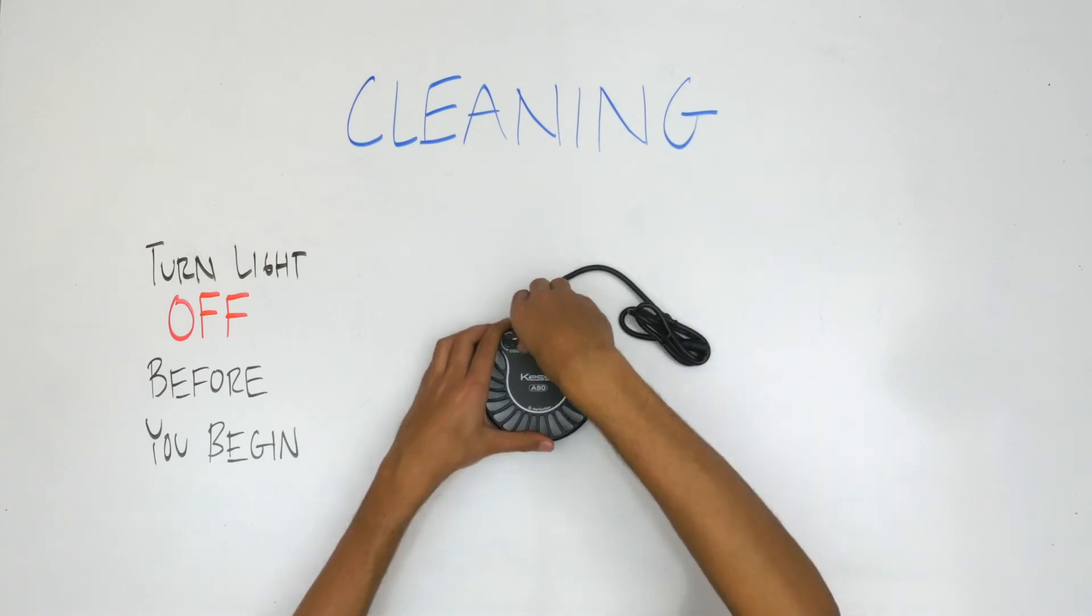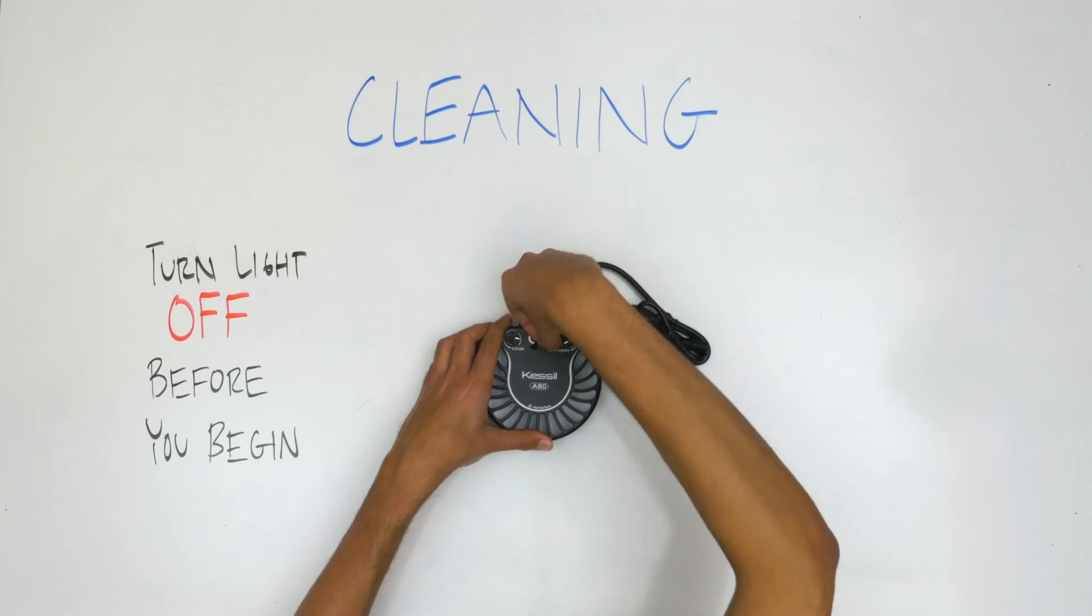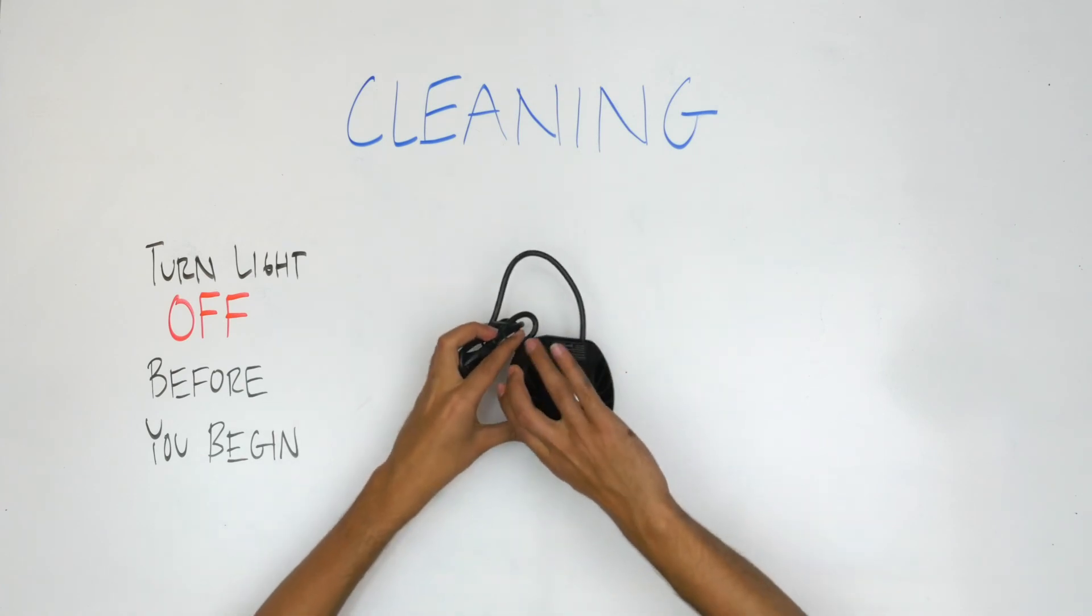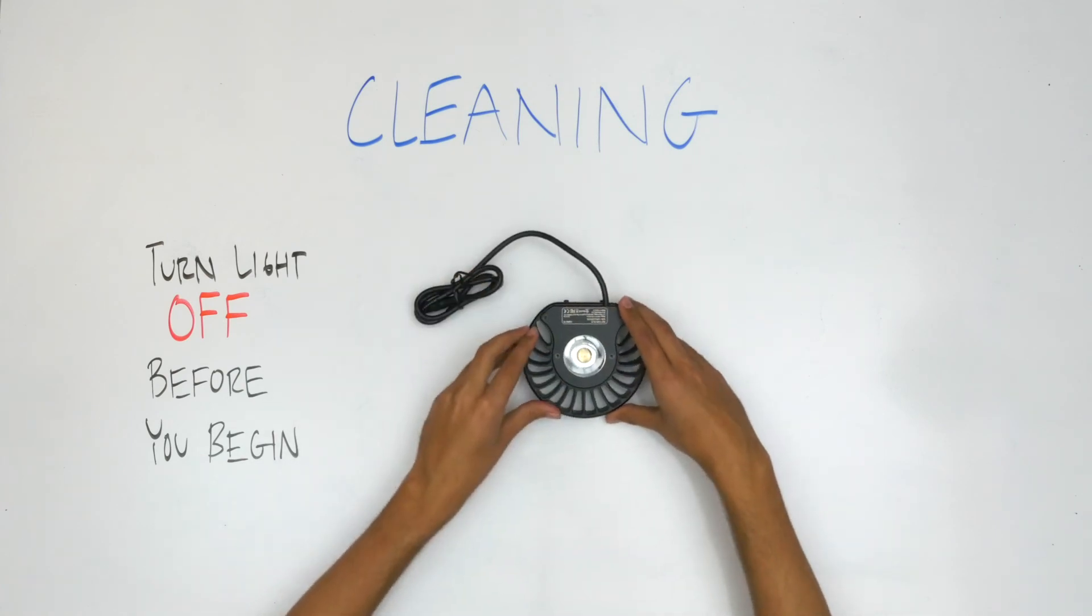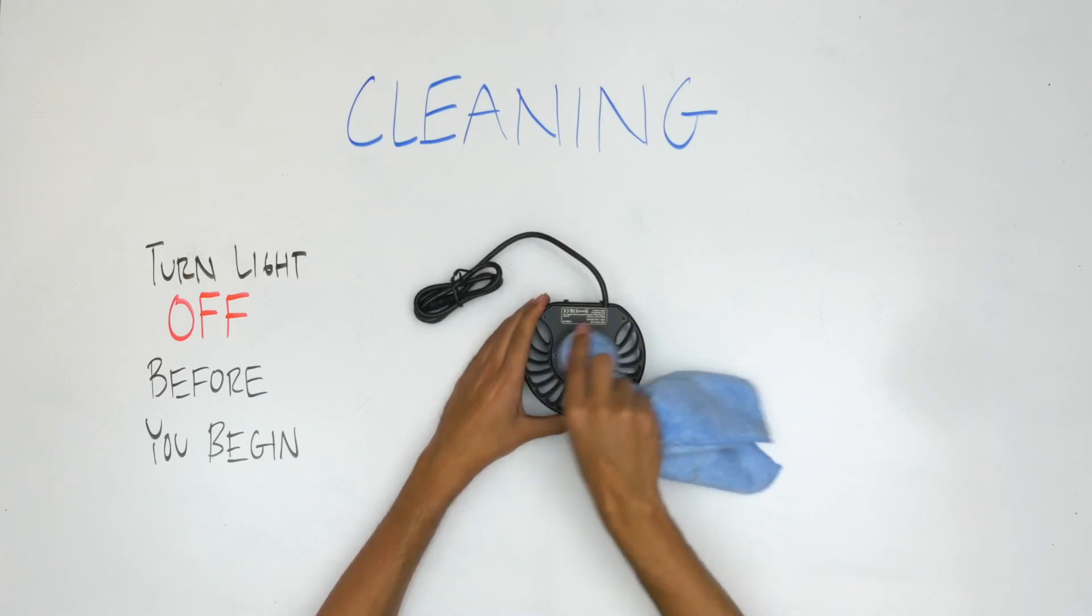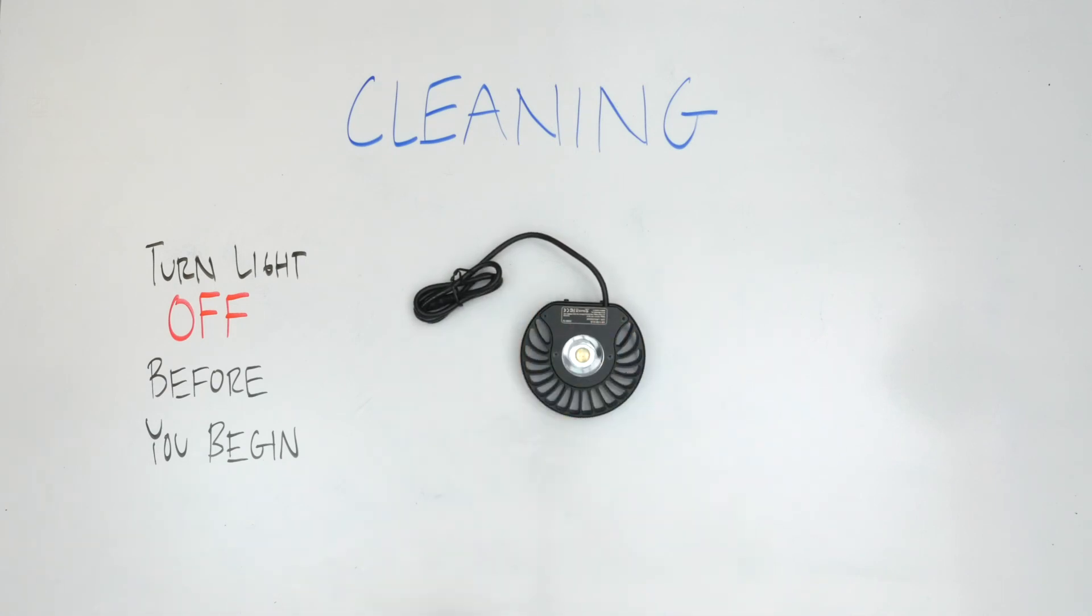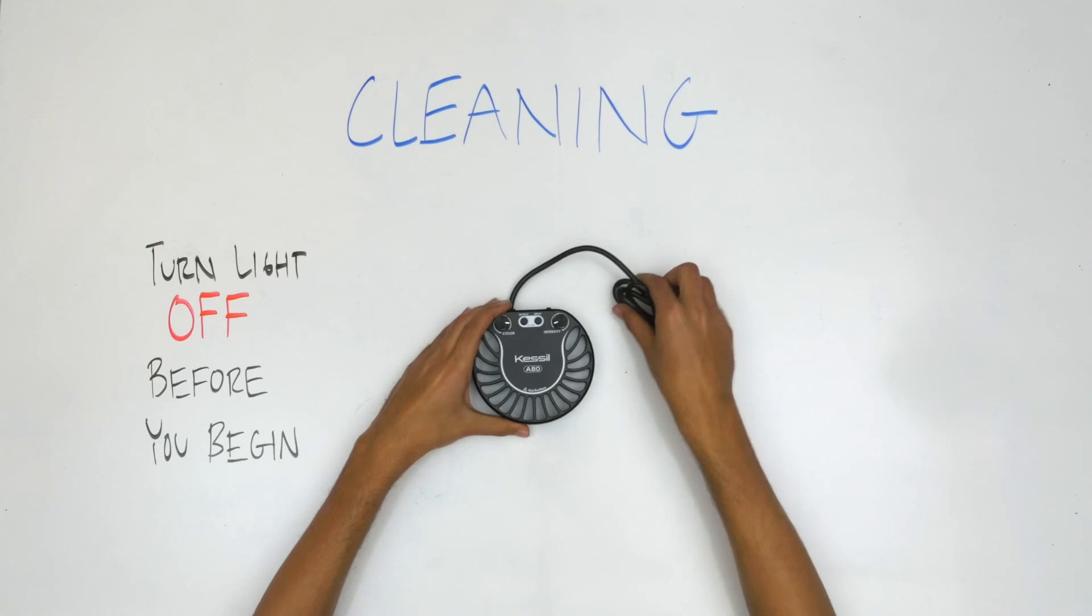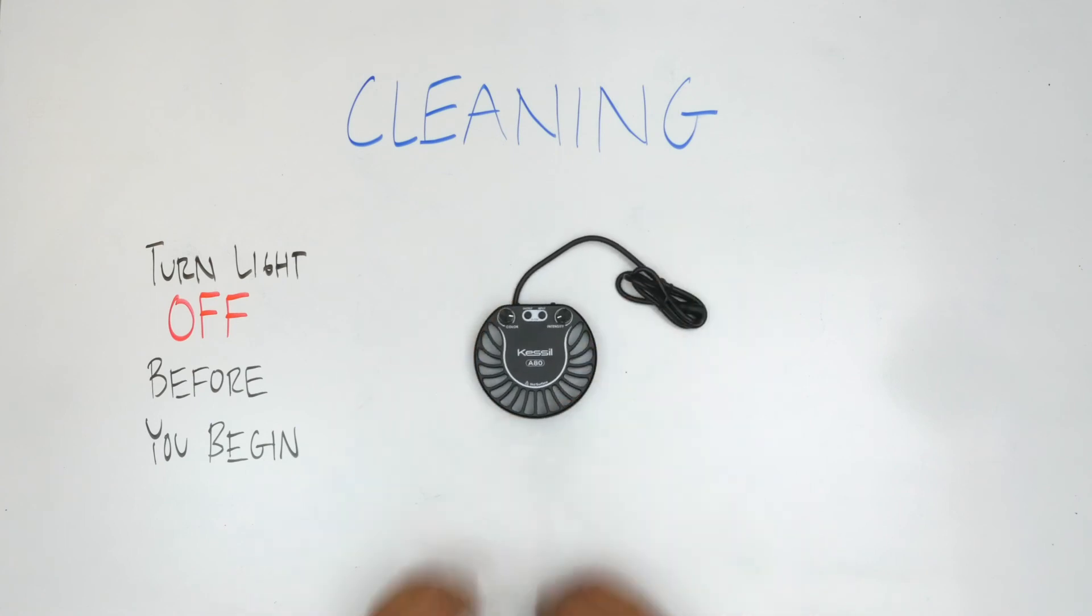If the control ports are not being used, make sure they are cleaned often or covered using the provided plastic plugs. Another element to clean on a regular basis is the lens. Remove any dust or water marks by using a cotton swab and isopropyl alcohol or a wet cloth. Be careful not to get any water inside the light and let the lens dry completely before using it again. Keeping the lens clean will help keep the light output at optimal levels.